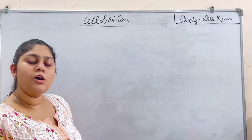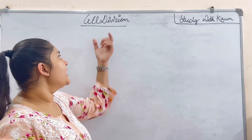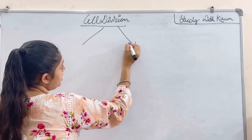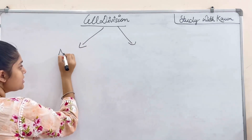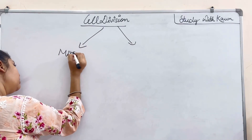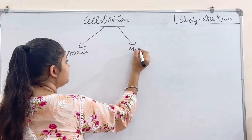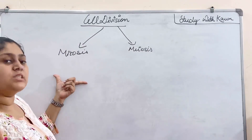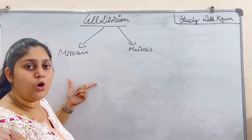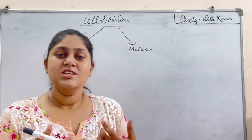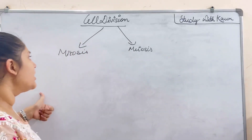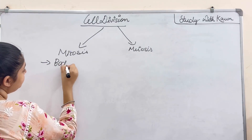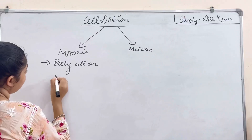Cell division is divided into two types: mitosis and meiosis. Mitosis takes place in somatic or body cells, like your skin, liver, and other body cells. So mitosis takes place in body cells or somatic cells.